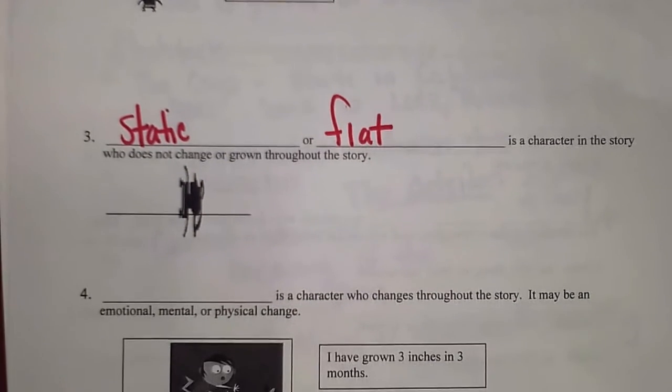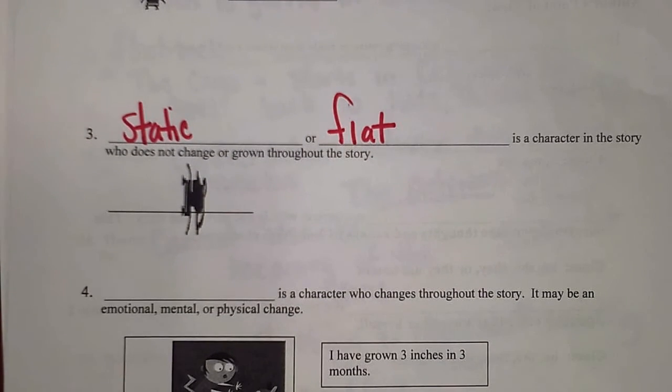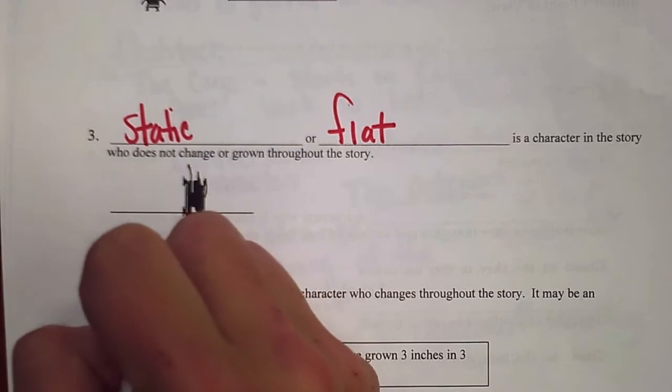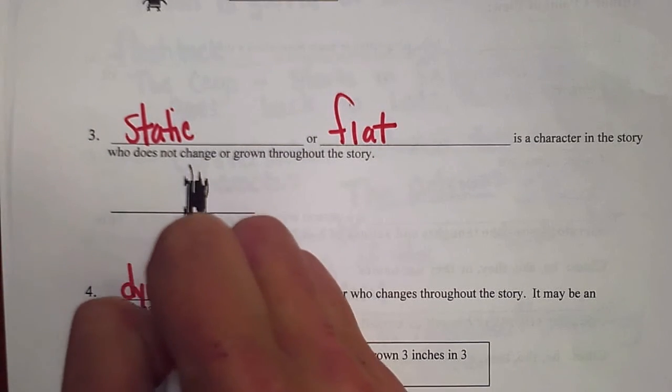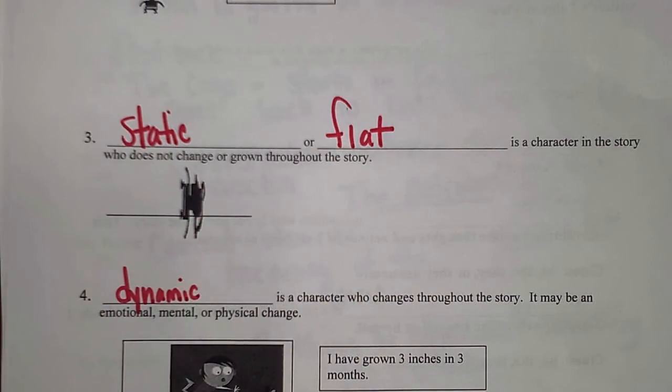Number four is probably the one you'll see the most: a dynamic character is a character who changes throughout the story. It may be an emotional, mental, or physical change. If you think of dynamite, when dynamite goes off it changes - so dynamic characters change depending on what happens to them, which changes the events and changes them as a person.